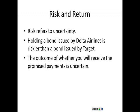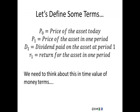Let's define some terms before we move forward. P-zero is the price of an asset right now. P-one is the price of the asset in one period. D-one is the dividend or cash flow paid on the asset at time one. And R is the return we get on this asset. We're using stock vocabulary here, but we could apply this to any sort of investment.